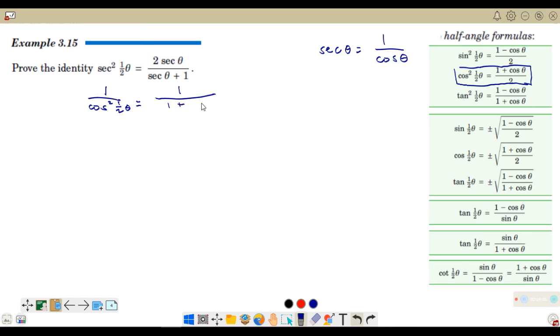Which is also equal to the reciprocal of this value here. We have 1 plus cosine theta over 2. Or, secant squared 1 half theta is equal to, what is the reciprocal of this? So, 1 times the inverted, or simply, the formula here. Just invert the numerator and denominator. You will have 2 over 1 plus cosine theta.